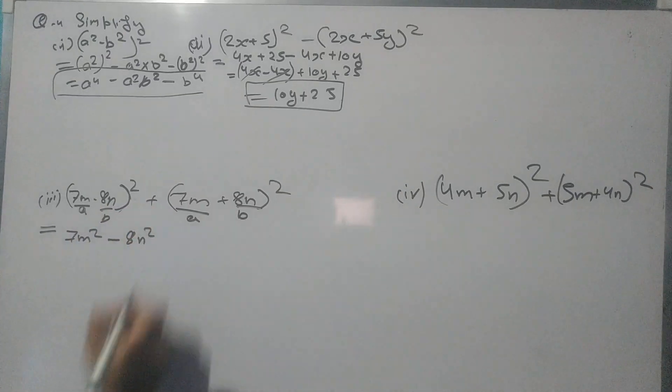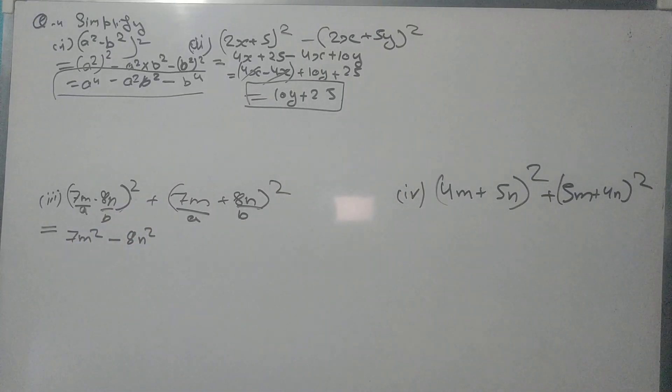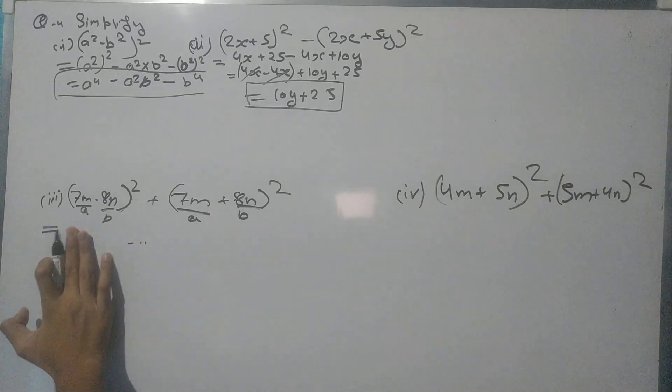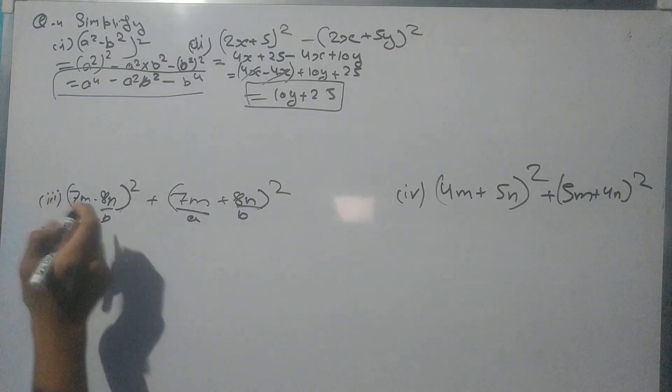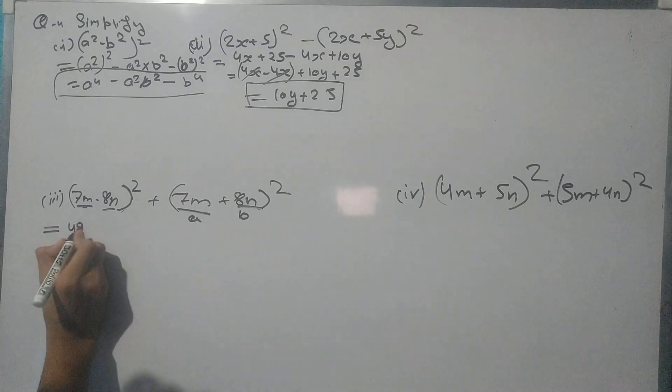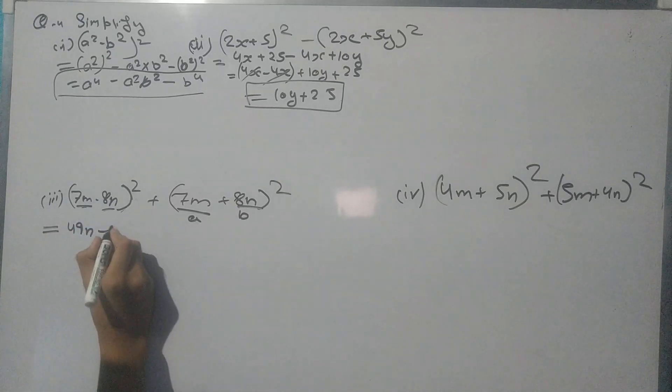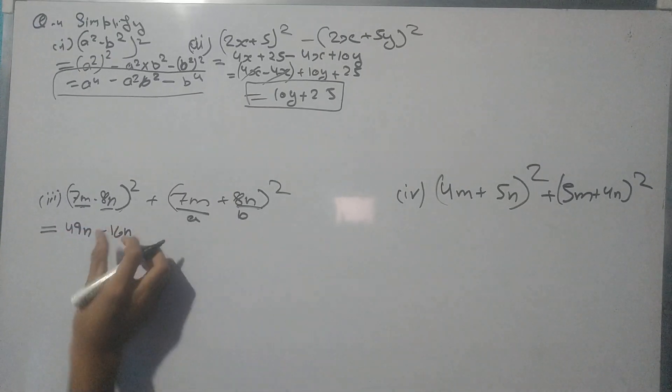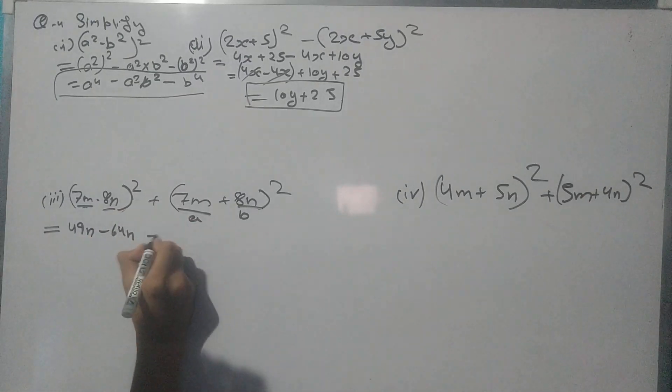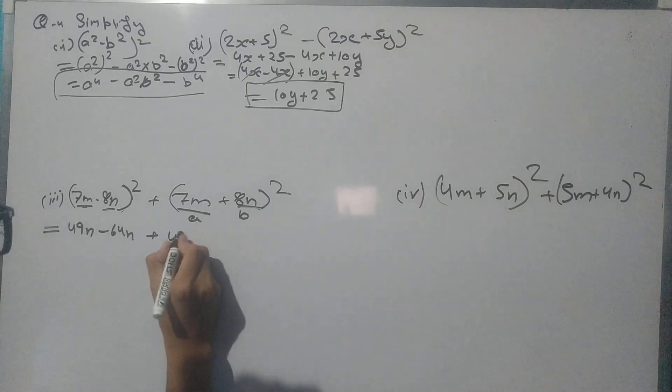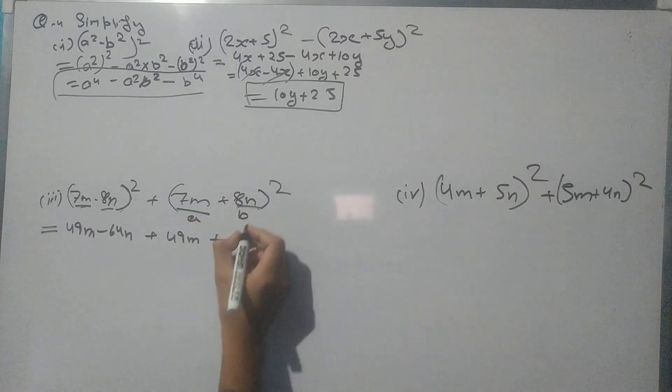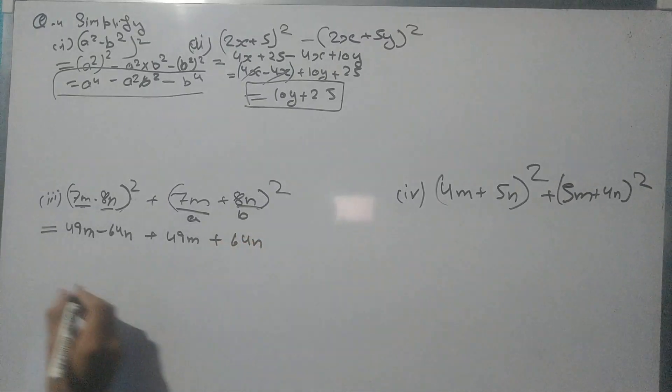Actually we cannot use any identity here, so let's make the square of it. 49m² plus 49m² minus 16n², 8n is 64n² plus 49m² plus 64n².